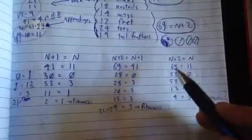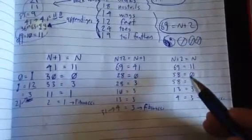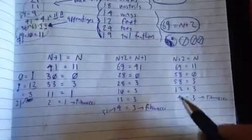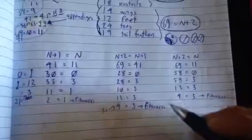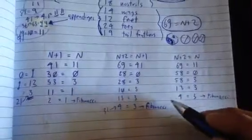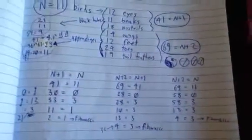Again, N plus 2 is equal to N plus 1, so 69 is equal to 41. Subtract 41 from both sides, you get 28 is equal to 0, or 28 is equal to 3, or 10 is equal to 3, or 13 is equal to 3. Or 1 and 3 is 4 is equal to 3, which is correct in Fibonacci once again. N plus 2 is equal to N, so 69 is equal to 11. Minus 11 from both sides is 58 is equal to 0. 5 and 8 is 13 is equal to 3, which is correct in terms of Fibonacci.